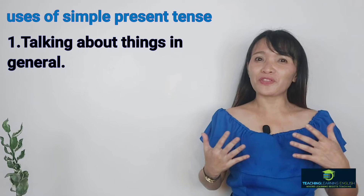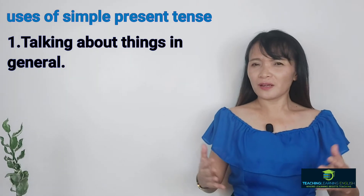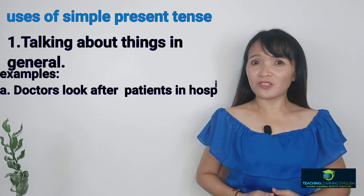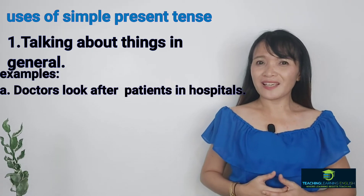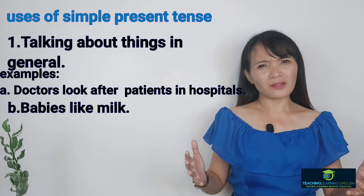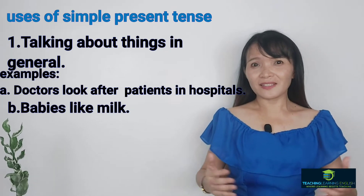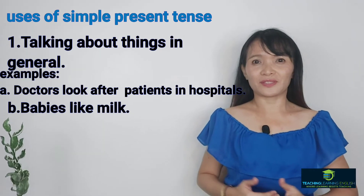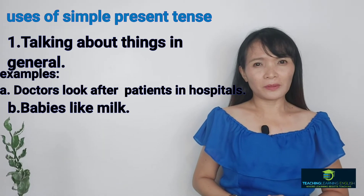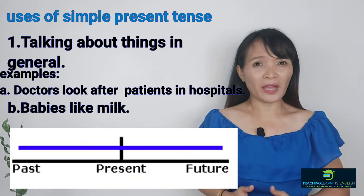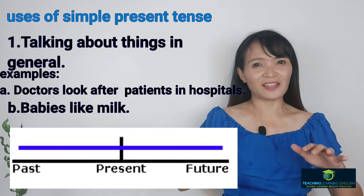The uses of Simple Present Tense. The first is we use Present Tense when we talk about things in general. What are general things? We say doctors look after patients in hospitals — it's part of their job. We say babies like milk — that's nature. These are general truths. On the timeline, general truths don't happen just now, or in the past, or future specifically, so we put a straight line here.